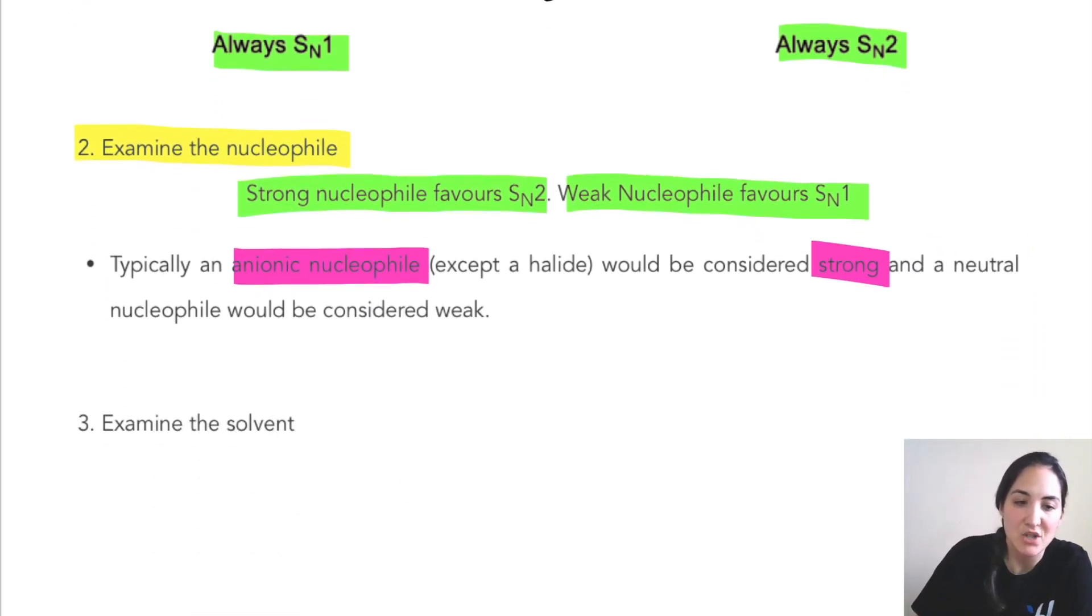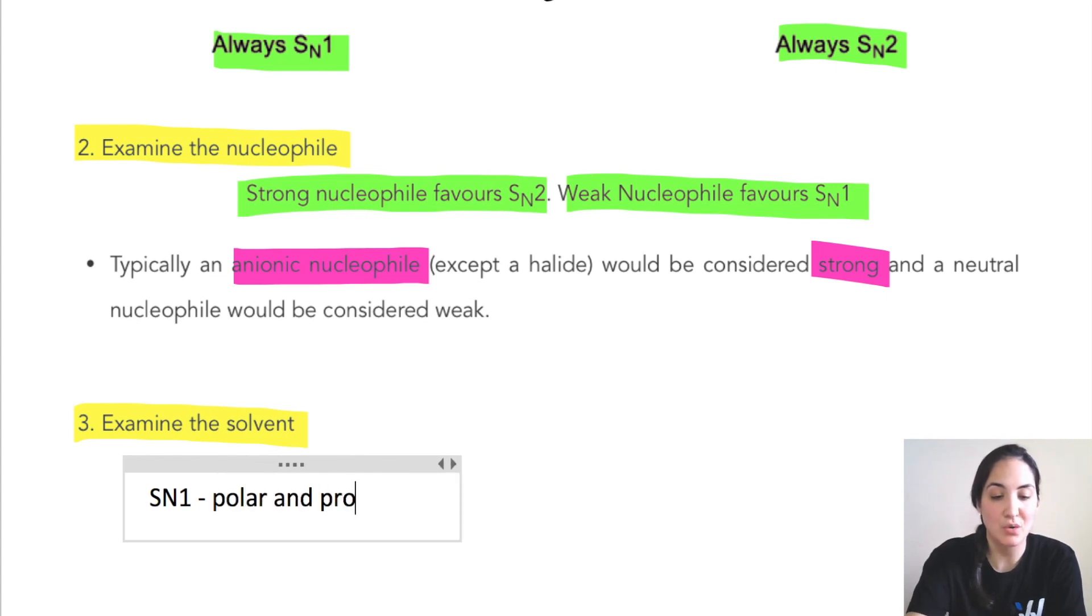The final part is to look at the solvent. Looking at solvents, if we have an SN1 reaction, then we need polar and protic solvents. Why is that? Polar will help with solubility and stability of the intermediate. The protic part, having protons, will help stabilize the carbocation and will help stabilize the leaving group once it's gone.